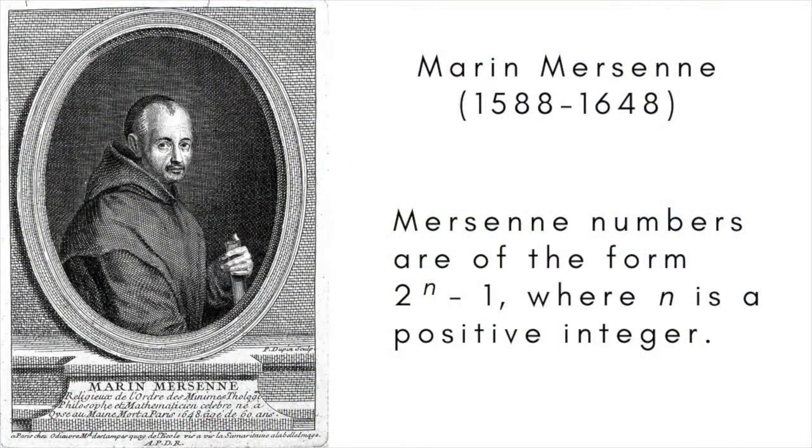The easiest to find primes are those that happen to be Mersenne numbers, named after the French friar and polymath Marin Mersenne, who studied them in the first half of the 17th century. All Mersenne numbers can be expressed in the form 2 to the n minus 1, where n is a positive integer. In other words, they are one less than the corresponding power of 2.